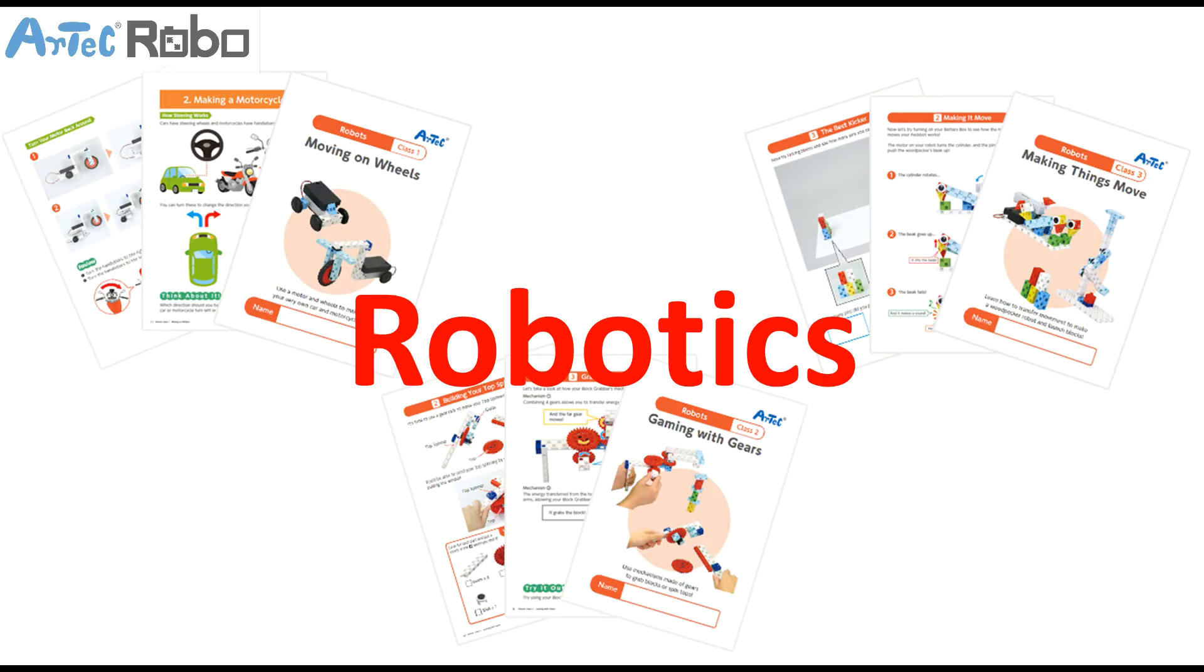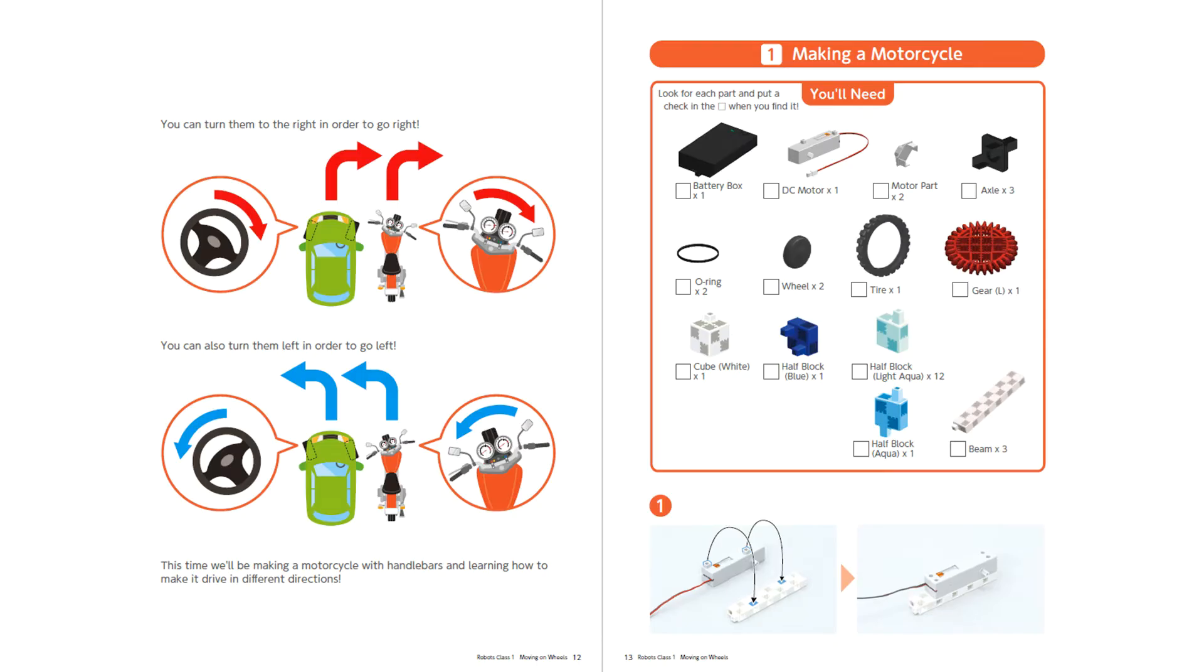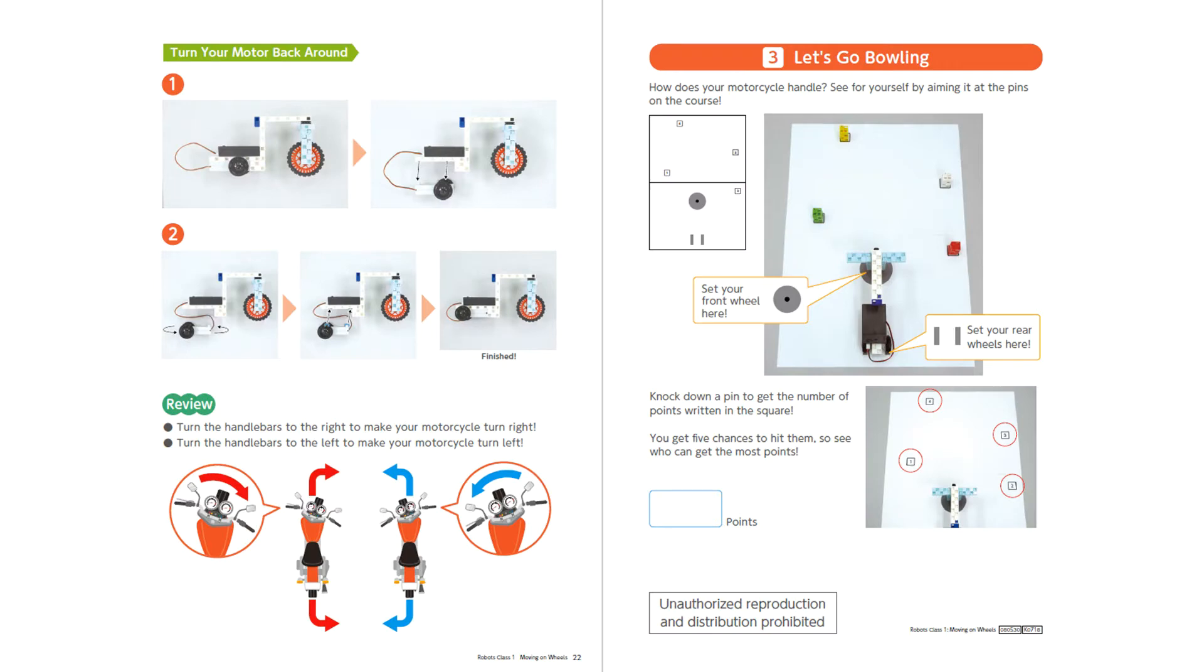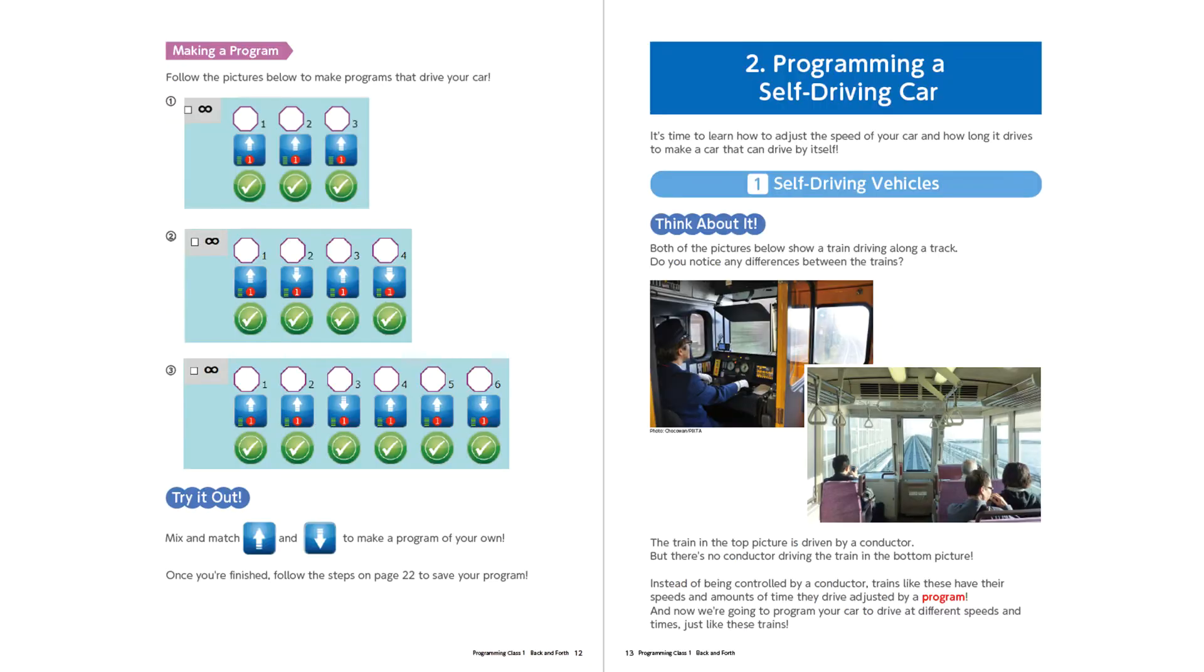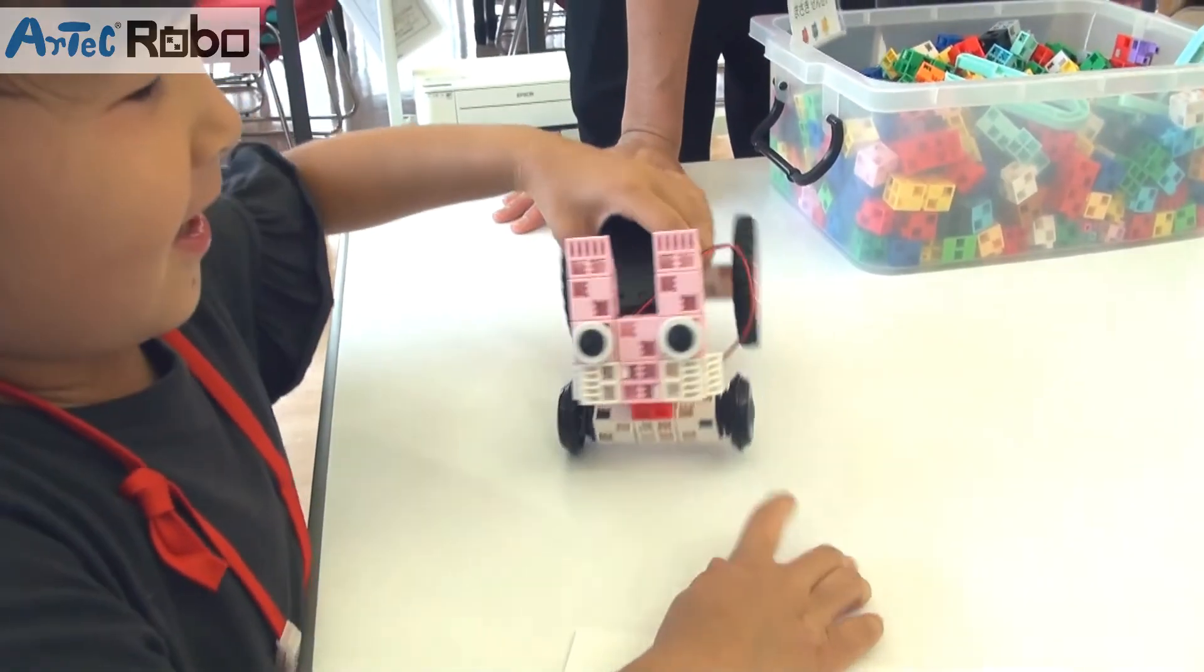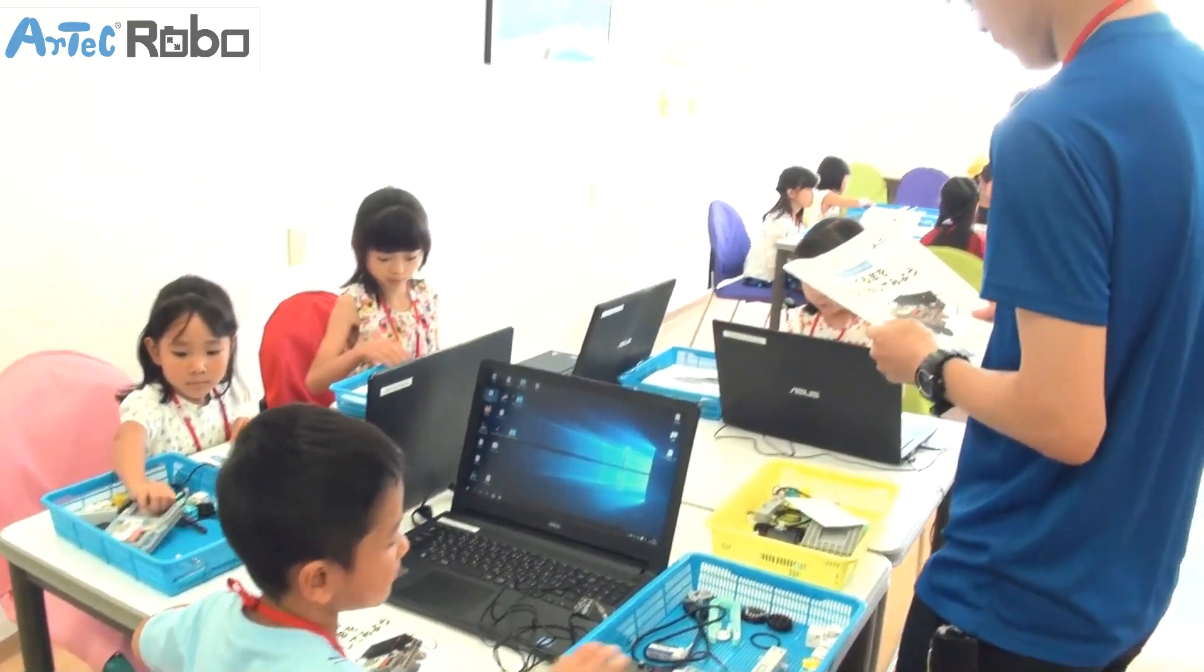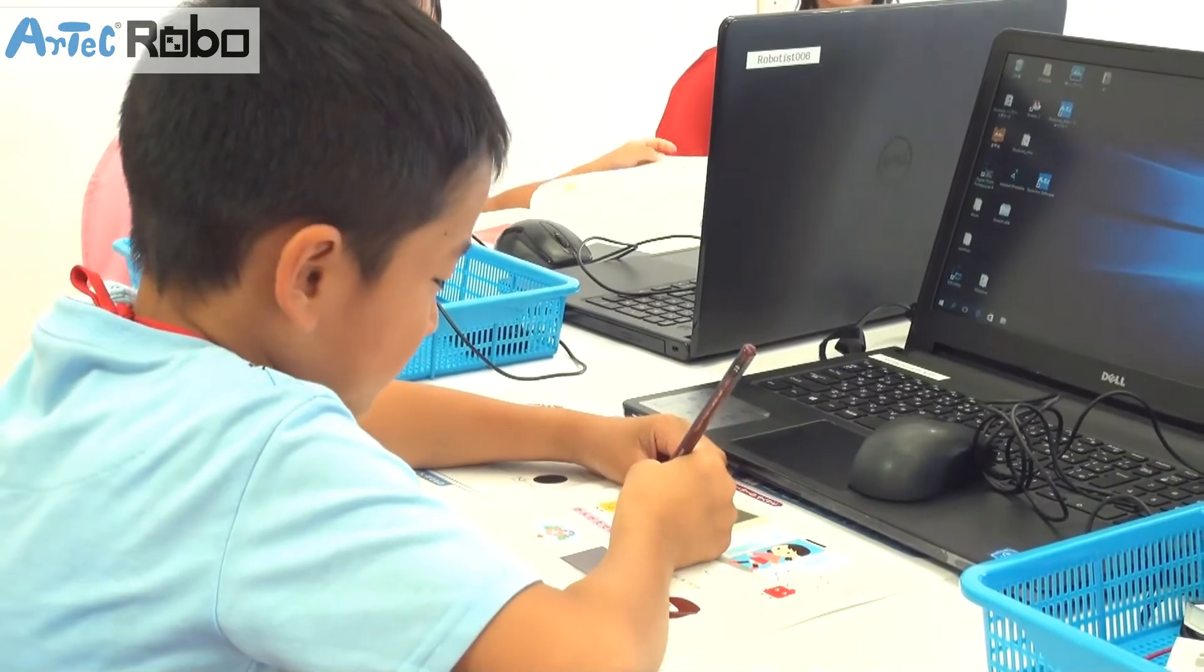There are a total of twelve lessons covered in six textbooks. Those textbooks not only contain instructions on how to assemble and program the robot, but provide detailed insight and facts about technology used and its application in real life. Furthermore, at the end of each lesson, children are encouraged to apply the obtained knowledge to come up with original designs.